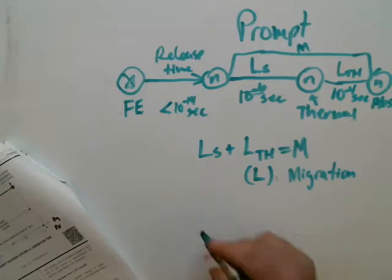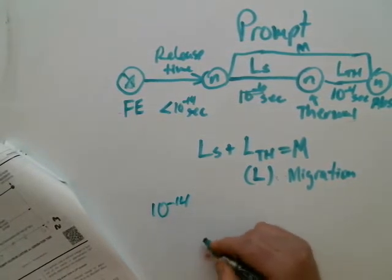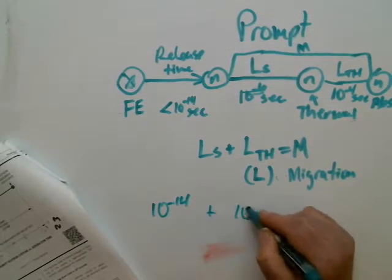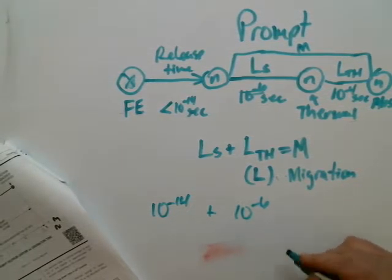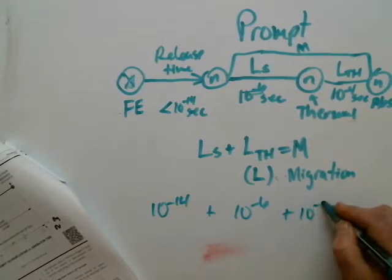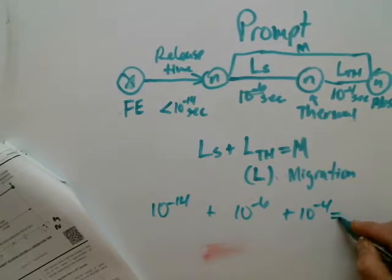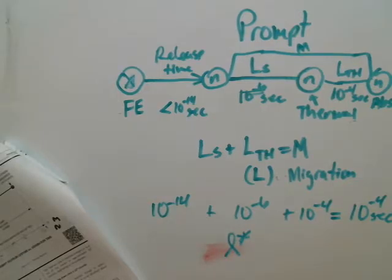So you could add up all these times. 10 to the minus 14th is release, plus 10 to the minus 6th seconds is the slowing down time, plus 10 to the minus 4th is the thermal diffusion time. If you add those all up, you essentially get 10 to the minus 4th with some serious zeros after it. That right there is going to be called L star, the prompt neutron generation time. And it is equal to 10 to the minus 4th seconds.